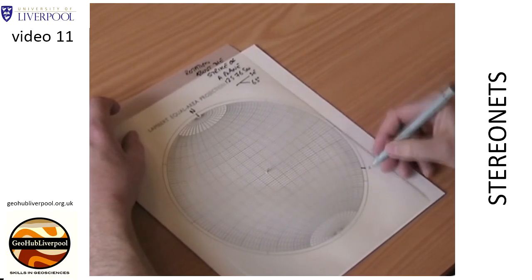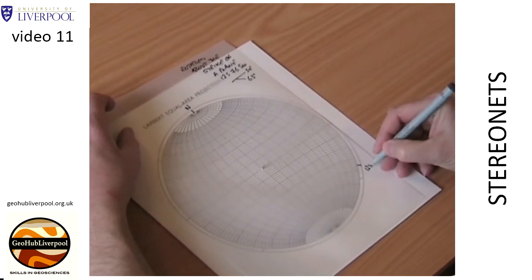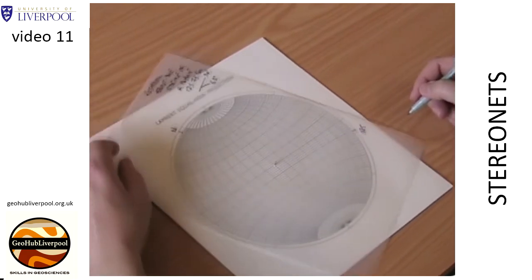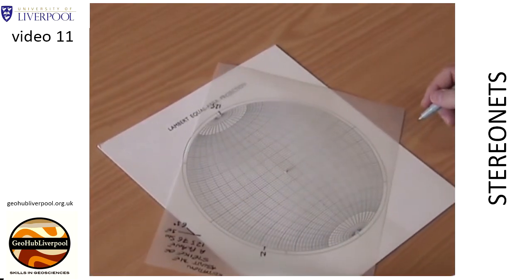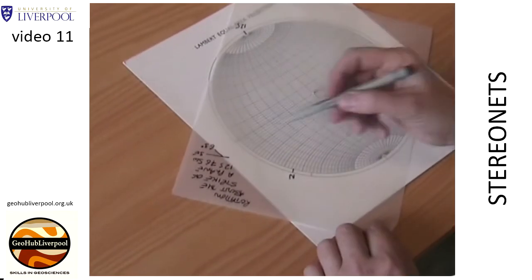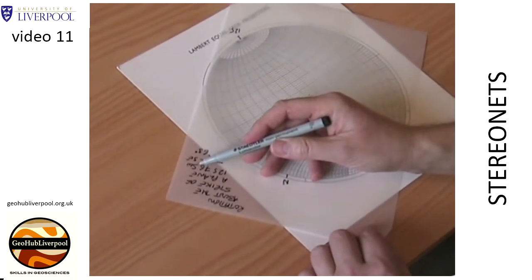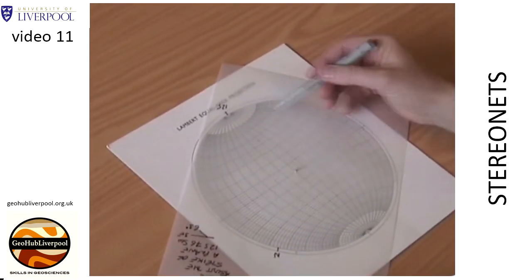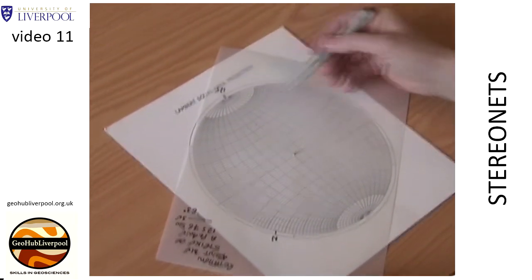Rotate the tracing paper so that this mark lies on the north pole of the stereo net. The plane dips at 76 degrees towards the southwest, so find the correct section of the equator.